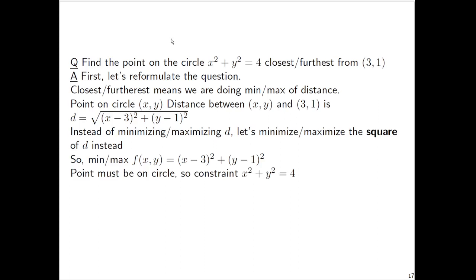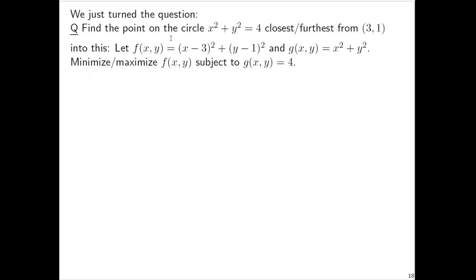What about the constraint? The constraint is the point has to be on the circle. So we've got x² + y² = 4, or rather g(x,y) = 4, where g(x,y) = x² + y². We've turned the question into the right format.